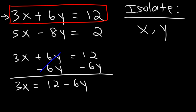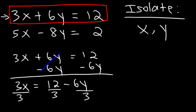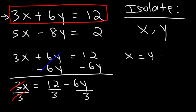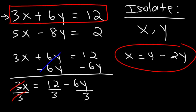Next, to get x by itself, we need to separate the 3 from x. The 3 is multiplied by x, so we perform the opposite operation — division. We divide every term by 3. The 3s cancel, giving us x. 12 divided by 3 is 4, and negative 6y divided by 3 is negative 2y. So we have x is equal to 4 minus 2y — no fractions, which is great.